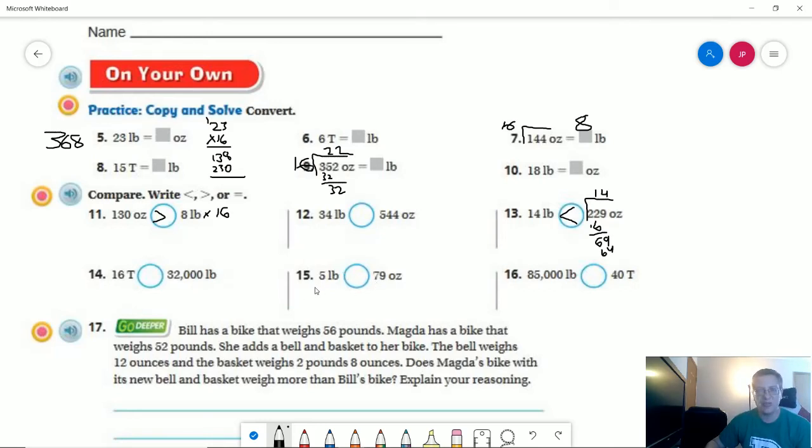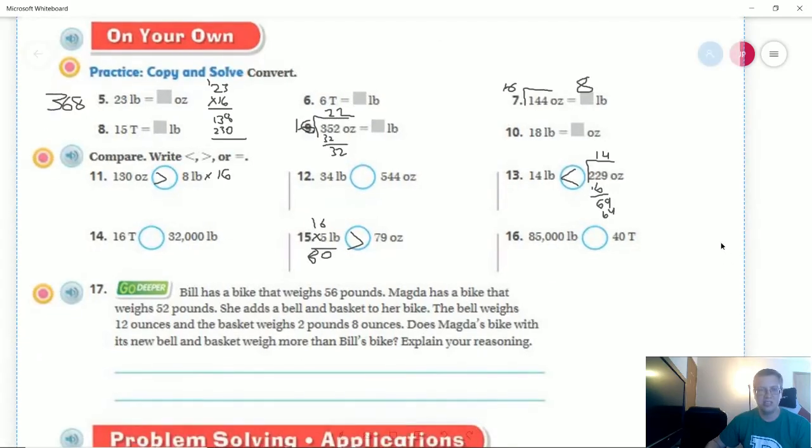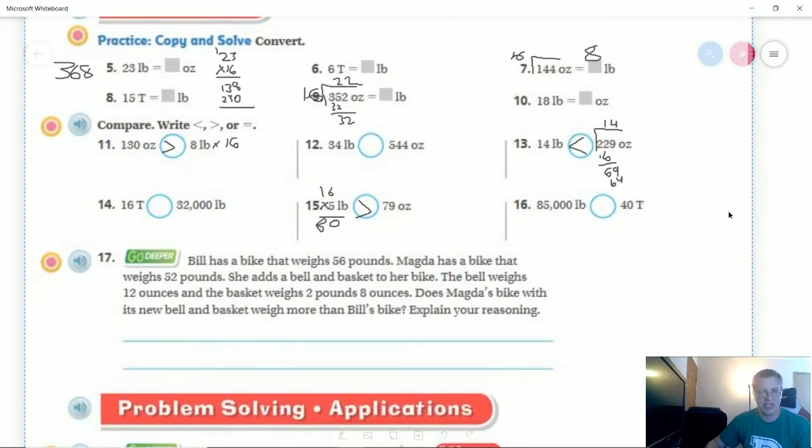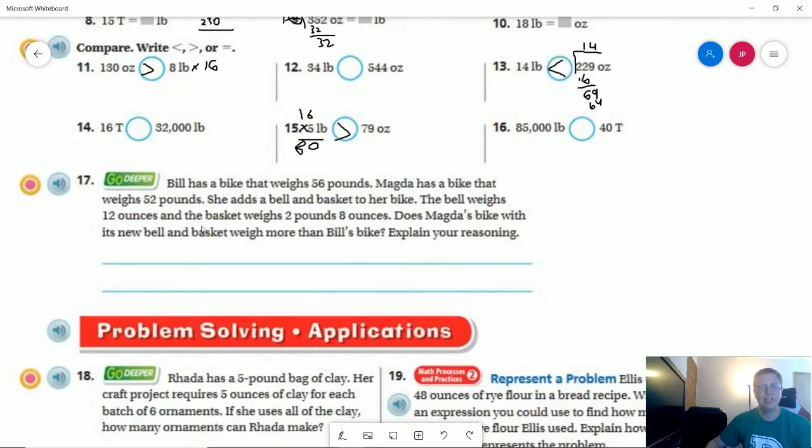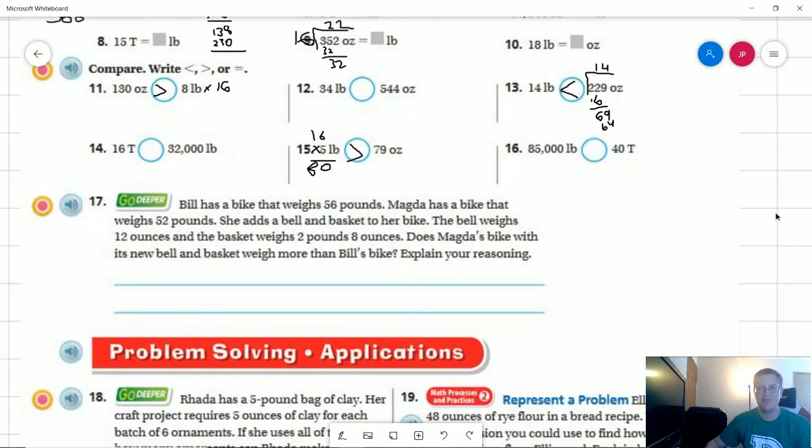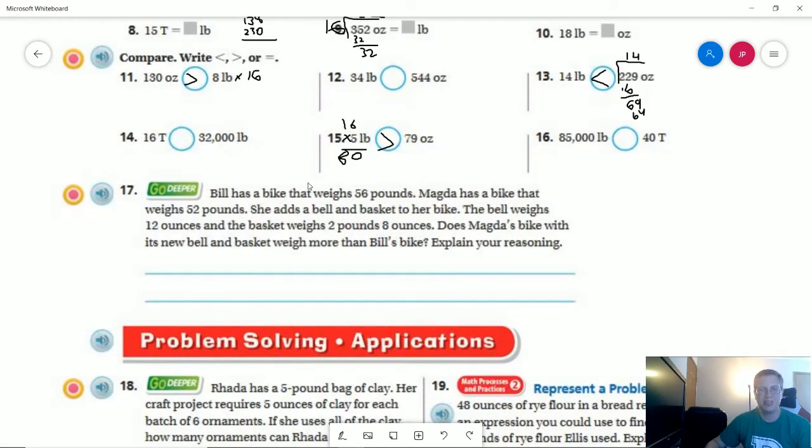Number 15, I'm going to do times 16 because that one's easier this time. So I can get a zero carry my three. I get 80. So this side would be greater. Number 17, I don't remember if I assigned this one because normally I don't give word problems when they show up down here. I'll do this one really quick. If we weren't supposed to do this one, I apologize.